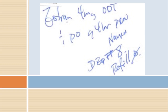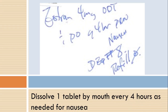This one is Zofran 4mg ODT. Zofran is an anti-nausea medication, and you'll see that in the directions: one PO Q 4 hour PRN nausea. PRN means as needed. So: one tablet by mouth every four hours as needed for nausea — no nausea, no need to take it. This is an ODT prescription — an orally disintegrating tablet that dissolves in the mouth. So the preferred verb is 'dissolve': dissolve one tablet by mouth every four hours as needed for nausea.